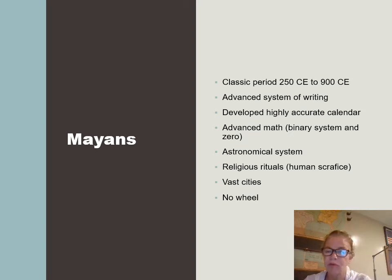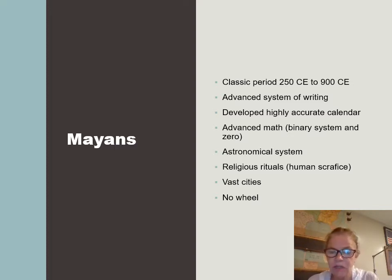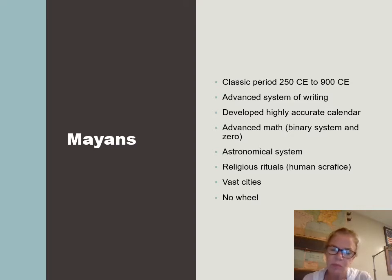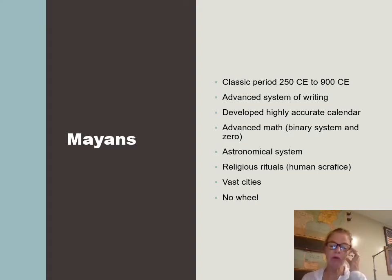The Maya were around from 250 to 900 AD and died out about the same time the Vikings came to America. It's believed they ran out of fresh water — they had a period of drought on the Yucatan Peninsula — and their civilization dwindled. When the Spanish came over, they believed the Maya to be heathens because they didn't practice Christianity, so they destroyed much of their written tablets. We don't know what the writing system says because so much has been lost to history.